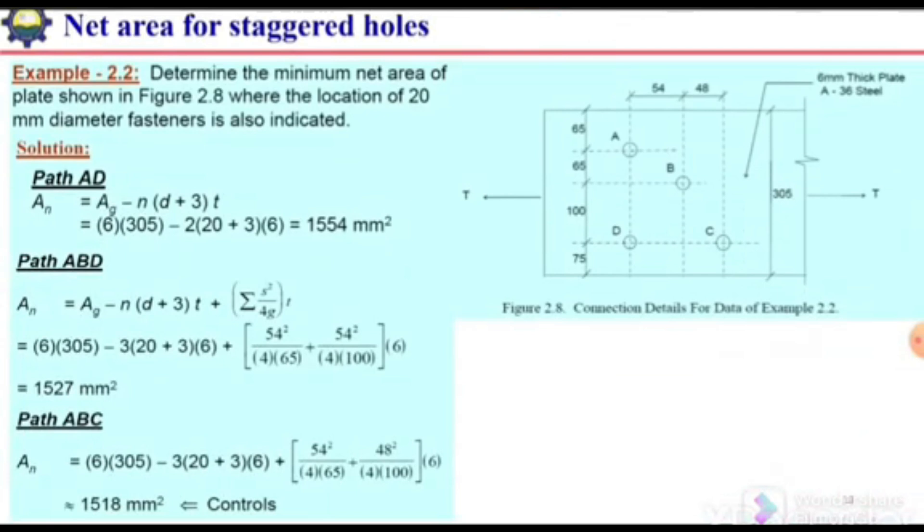Here is the example to determine the net area of a plate shown in the figure where the location of 20 millimeter diameter fasteners is also indicated. We have three rows of bolts: first row with one bolt here and a second bolt here, then the second row here and the next bolt over here.